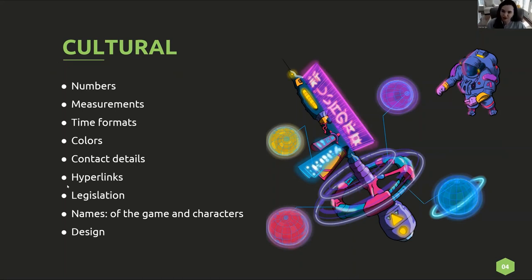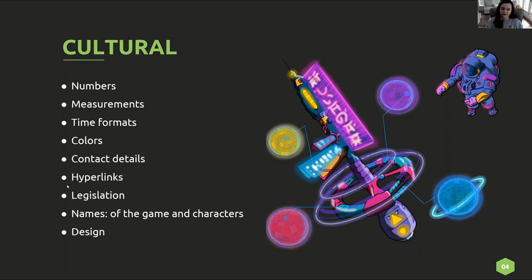The type of adaptation that needs to be carried out as part of the localization process goes far beyond the text. There are cultural elements such as adaptation of number systems, measurements, time formats, colors, contact details, and hyperlinks. There may also be legal issues to consider depending on the legislation of the target market. And in many cases, other elements such as the name of the video game, the cover, or the design of the characters may also be affected.